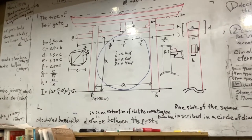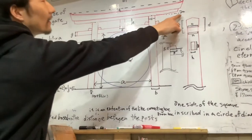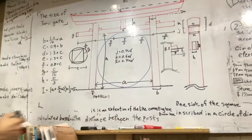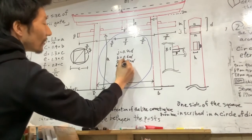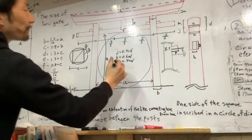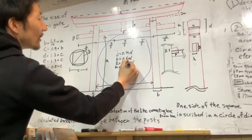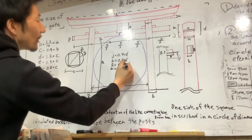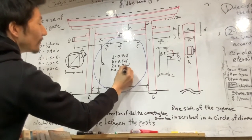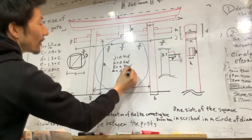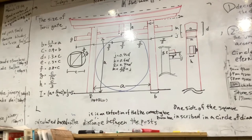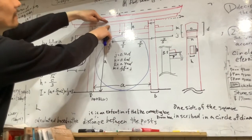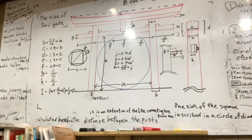M is this distance, this distance. So M is equal 1.5 slash 10 by J. J is this distance, right.